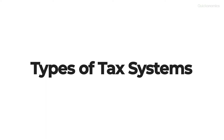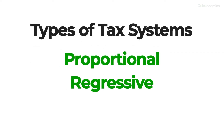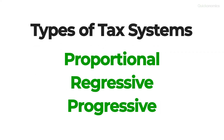The three most important types of tax systems are proportional, regressive, and progressive tax systems. The main difference between them is how the tax rate changes in relation to the income of the taxpayer.